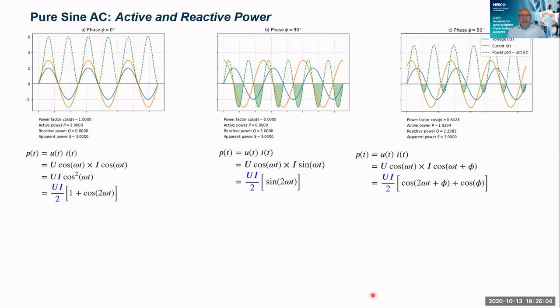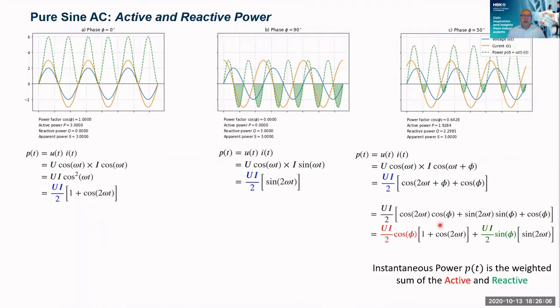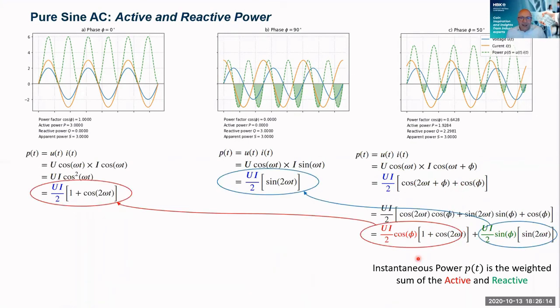Let's clear the board a bit. And let's take this last equation and do a little bit more expansion. So if I now take this expression and expand it, what we actually find is it turns out that the total instantaneous power is the weighted sum of an active component plus the reactive component.